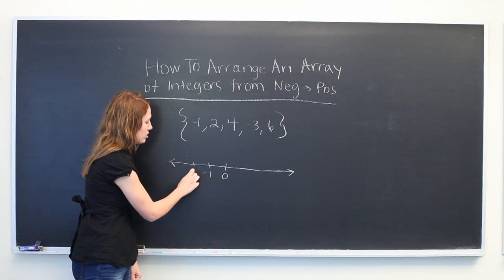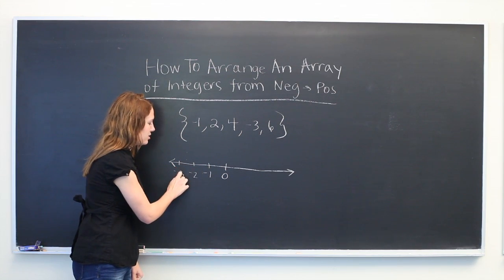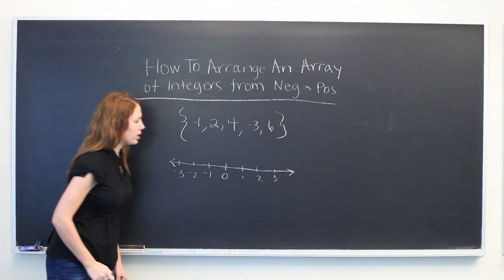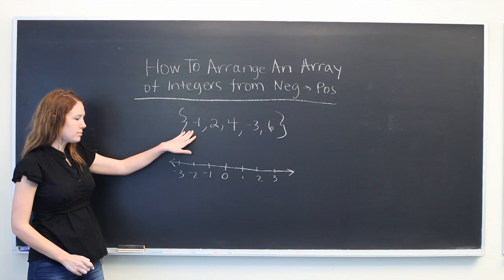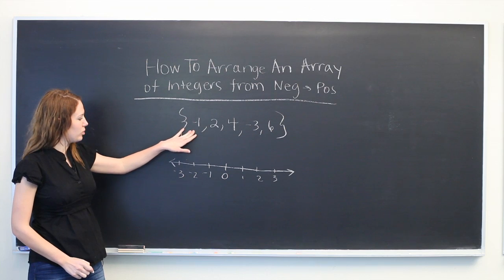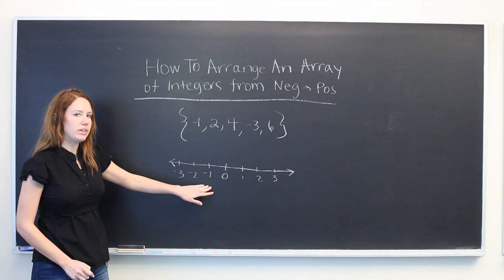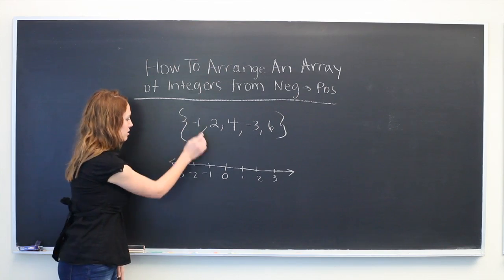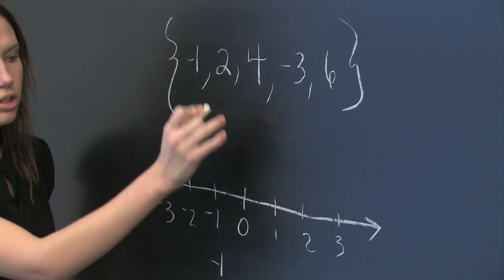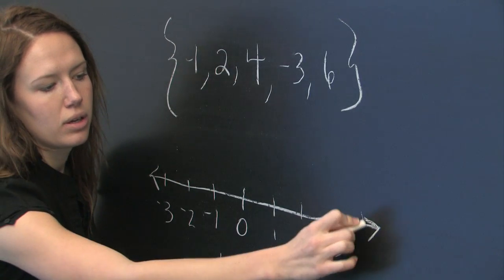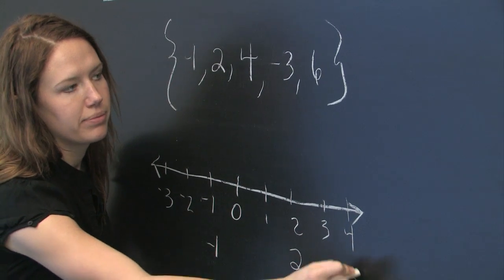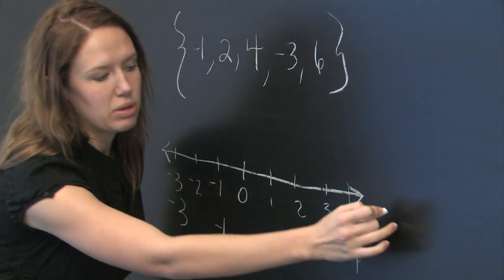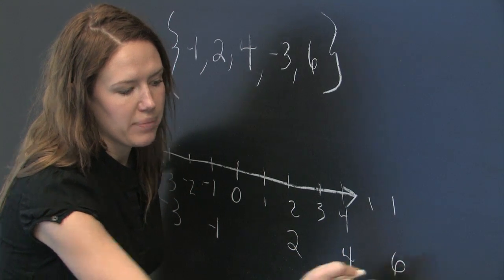So we're going to write a standard number line and then come up to our array and start with the leftmost value, simply writing it underneath the same value on the number line. So minus 1, 2, 4, minus 3, and then 6 would be over here.